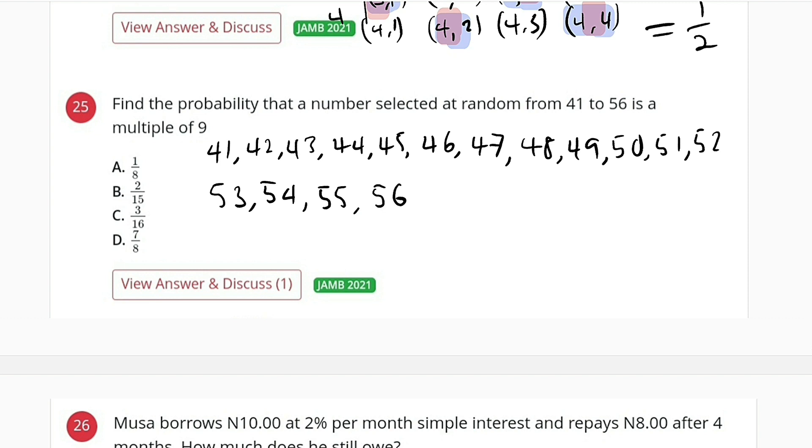So how many numbers do we have? Let me count: 1, 2, 3, 4, 5, 6, 7, 8, 9, 10, 11, 12, 13, 14, 15, 16. So we have a total of 16. The sample space is 16.